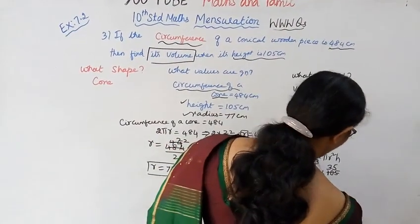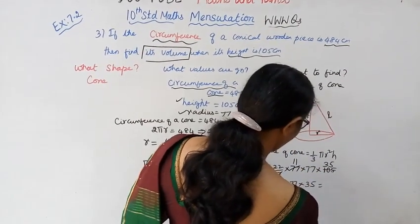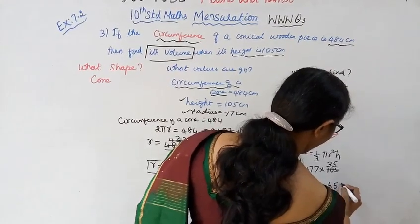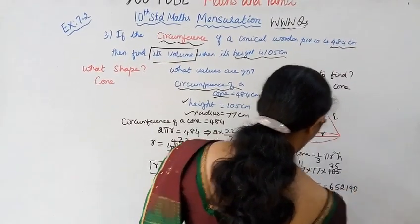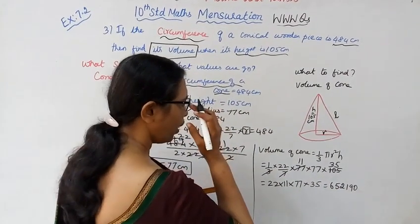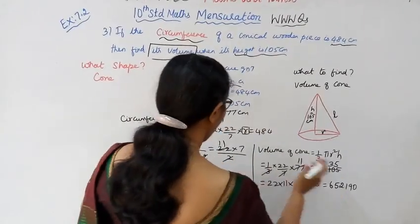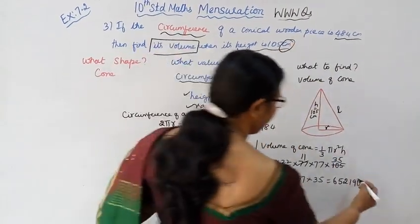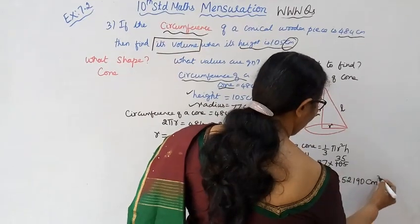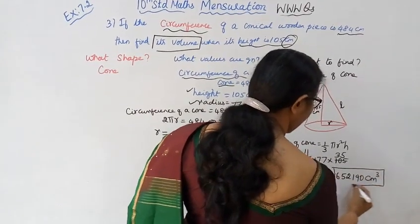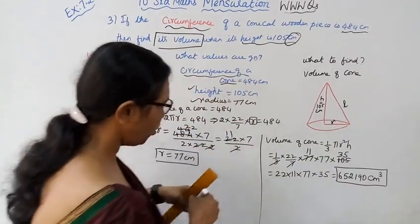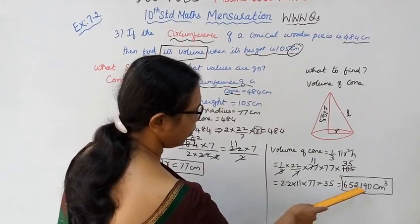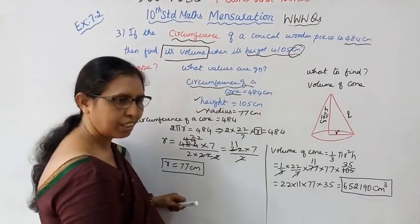Now calculating: 22 into 11 into 77 into 35 = 6,52,190. Volume of cone = 6,52,190 cm³.